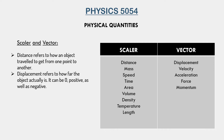Secondly, even if an object travels, it is possible that the displacement is zero. This is not possible with distance, because if an object has traveled, it must have covered some distance. This next example will clear it up more.